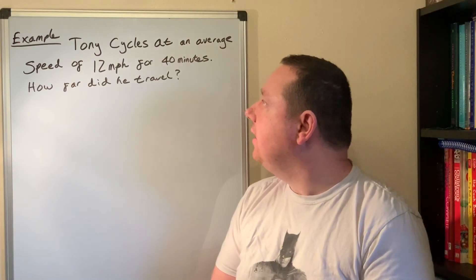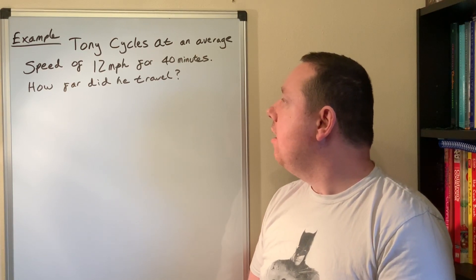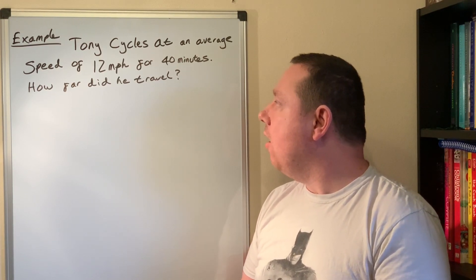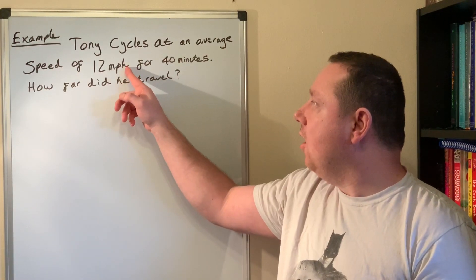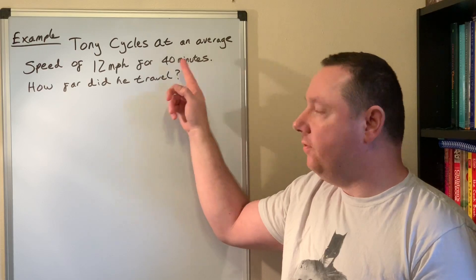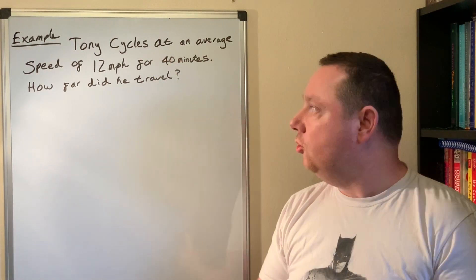Example: Tony cycles at an average speed of 12 miles per hour for 40 minutes. How far did he travel? Step one is to always check our units. Hours, miles per hour, minutes, these are completely different, so I have to convert my minutes to hours.